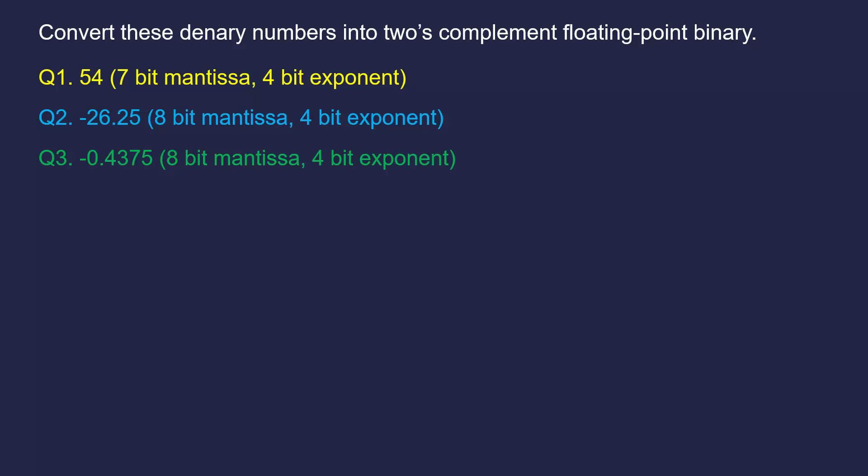Having talked about how we can go from decimal into two's complement floating point in the previous video, let's go through a few more examples. You may want to pause and have a go yourself before checking the answers. Bear in mind there are a few ways to get the answers, and the third question is a little bit trickier because we need to know about normalization, so it may be harder - but have a go.